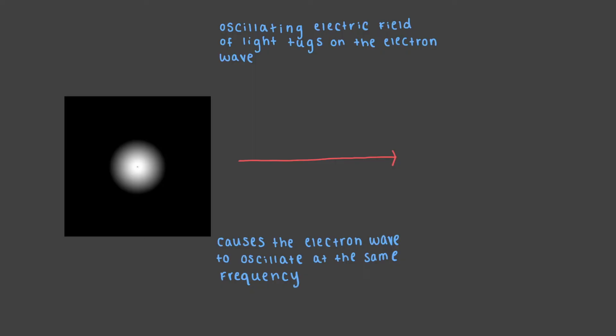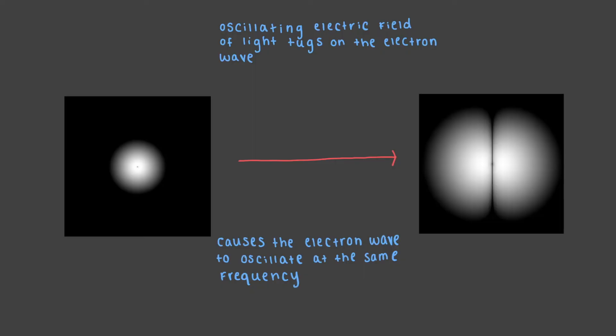The absorption of light occurs as the oscillating electric field of light tugs on the electron wave and causes the electron wave to oscillate at the same frequency. This process does not happen instantly.